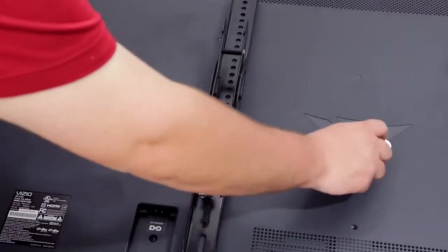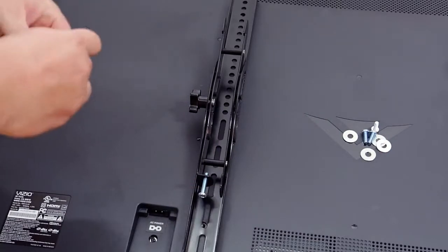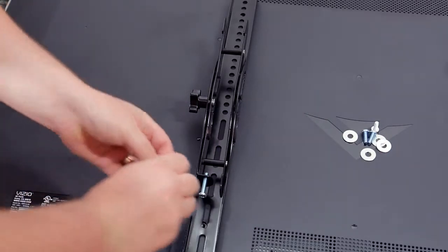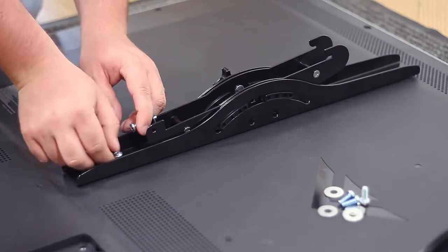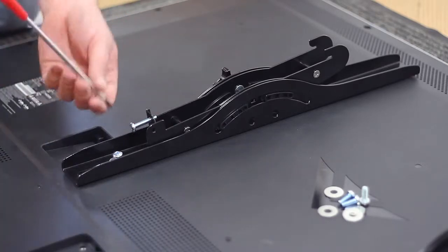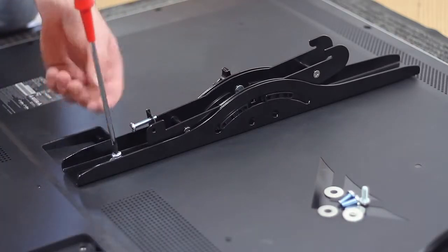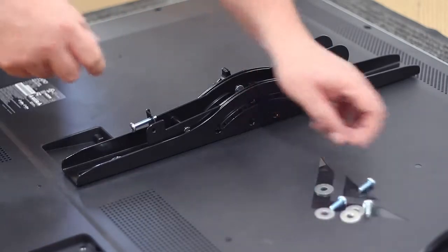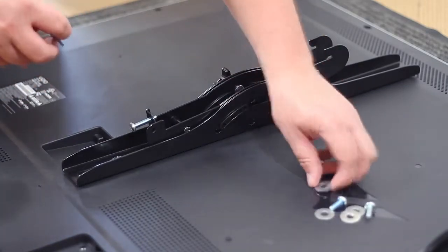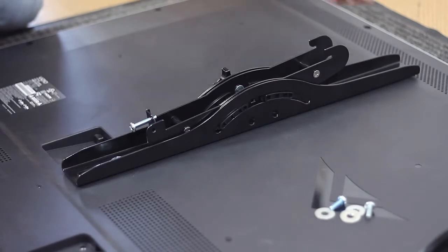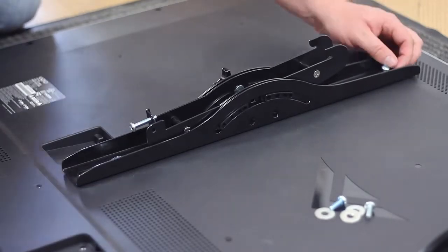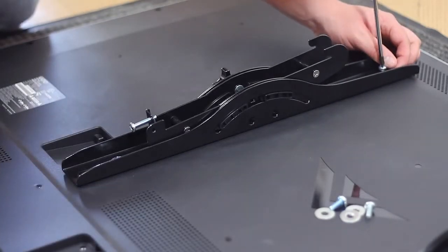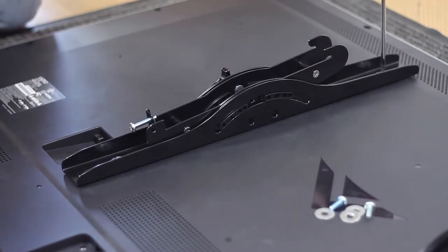Next, lay the mounting arm onto the back of the TV, then take a bolt and insert it into a washer, and lightly tighten the bolt to the mounting arm on the rear of the television. Please repeat the same process on the other side.